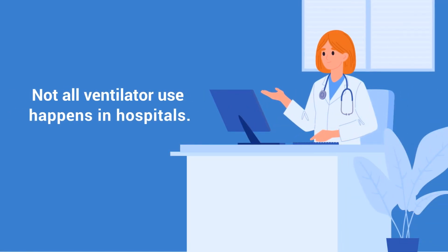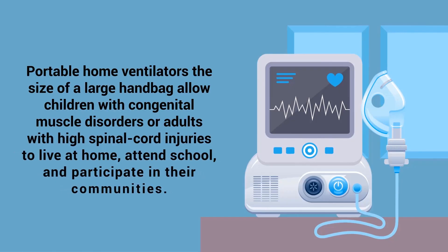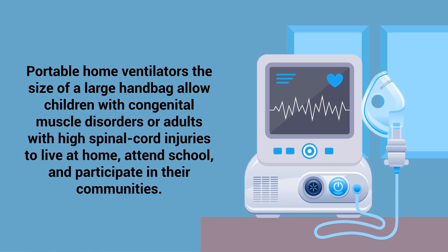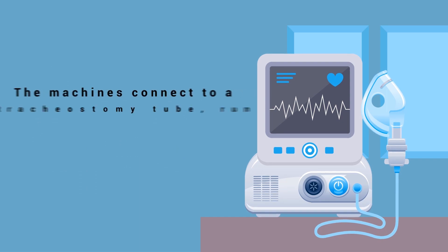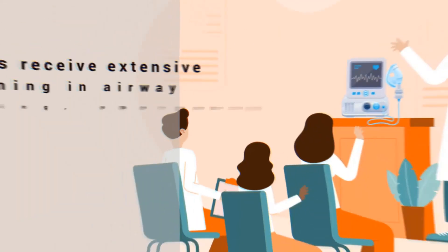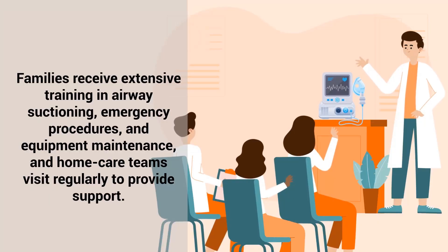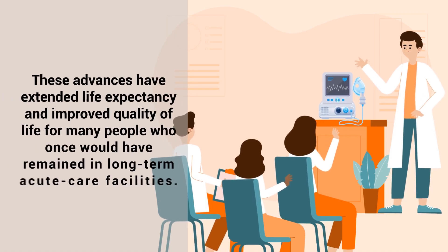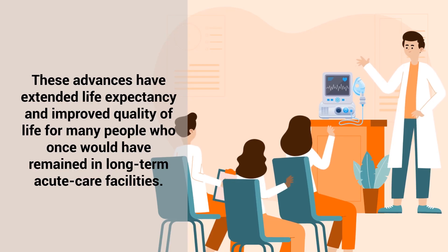Not all ventilator use happens in hospitals. Portable home ventilators the size of a large handbag allow children with congenital muscle disorders or adults with high spinal cord injuries to live at home, attend school, and participate in their communities. The machines connect to a tracheostomy tube, run quietly on household power or internal batteries, and include alarms for disconnection or low battery. Families receive extensive training in airway suctioning, emergency procedures, and equipment maintenance, and home care teams visit regularly to provide support. These advances have extended life expectancy and improved quality of life for many people who once would have remained in long-term acute care facilities.